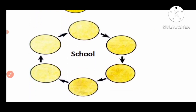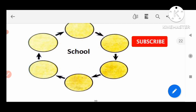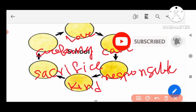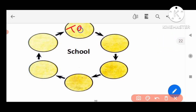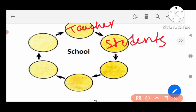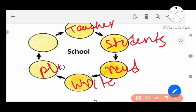Next one is 'school.' We write the words related to school. For example: teachers, students. We also do so many activities like read, write, play, and dance. Like that, we write words related to school.